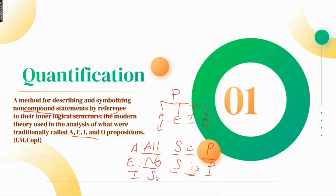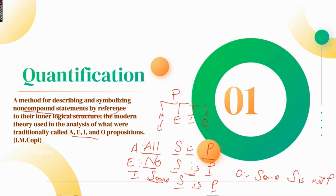For I proposition, we have 'Some S is P.' Again this quantifier is here, subject and predicate, and we have a copula as well. For O proposition, the form is 'Some S is not P.' In this particular case also we have subject term, predicate term, and then we have the quantifier and the copula.